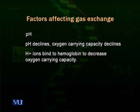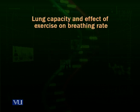pH: if pH declines, oxygen-carrying capacity also declines. When pH goes down, hydrogen ions are released in solution. These hydrogen ions bind to hemoglobin — to some part of it — to decrease its oxygen-carrying capacity. So if pH is decreased, then the oxygen-carrying capacity of the hemoglobin molecule will also decrease.